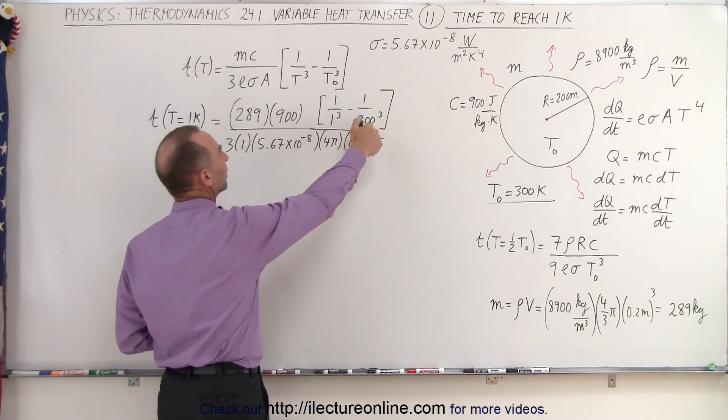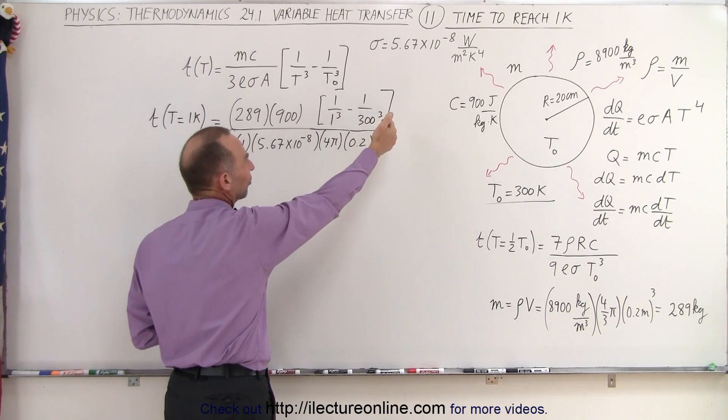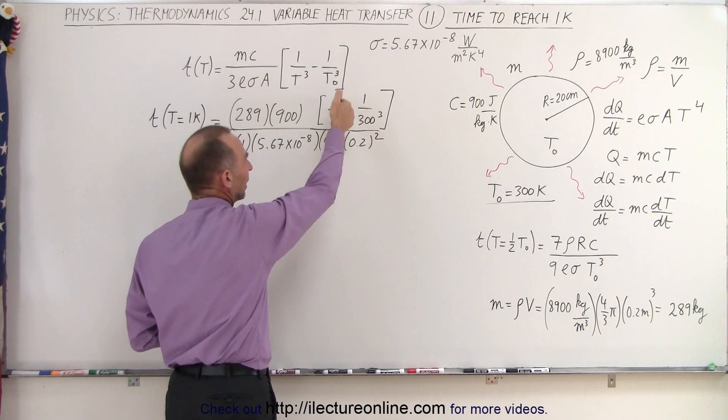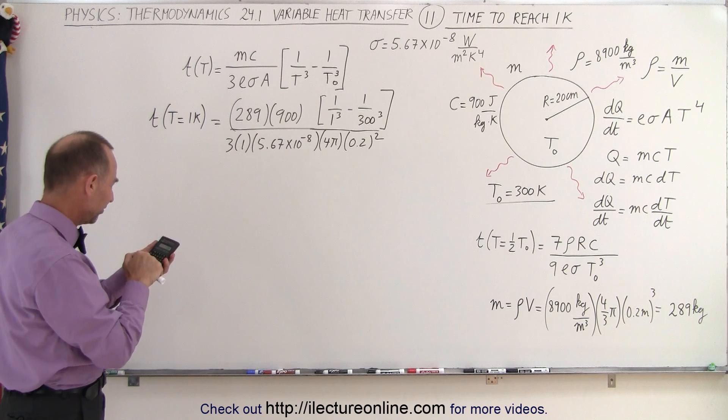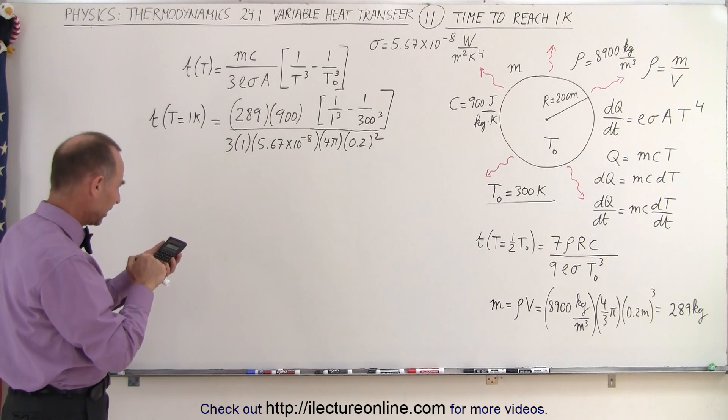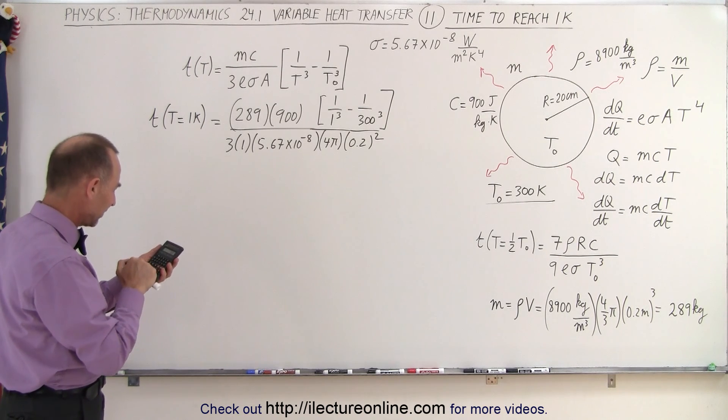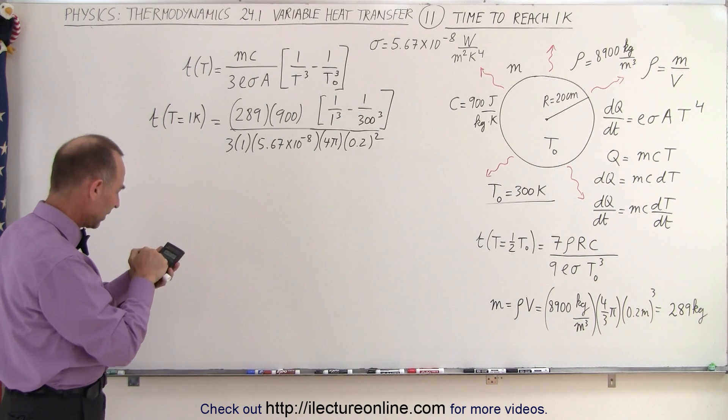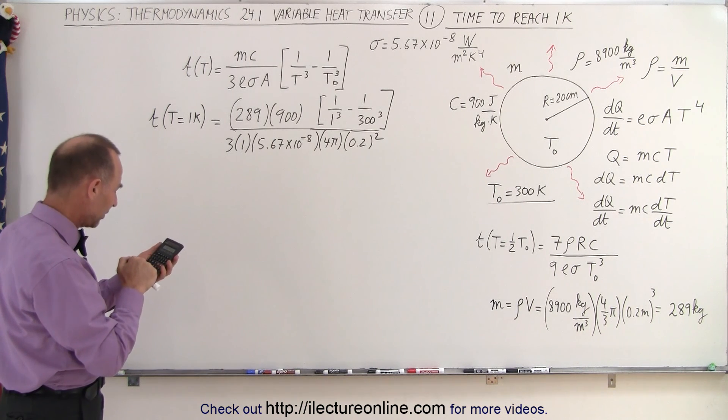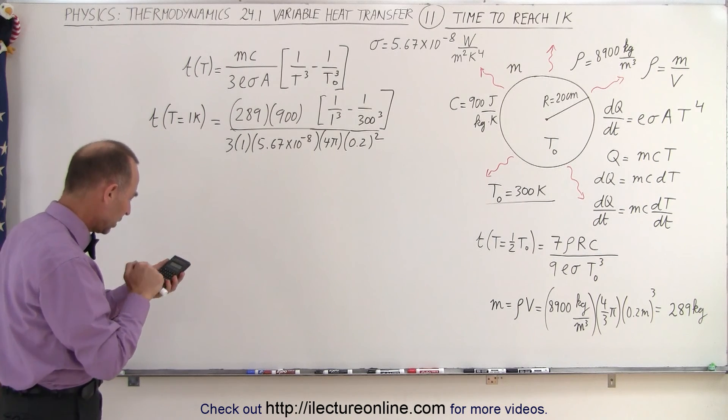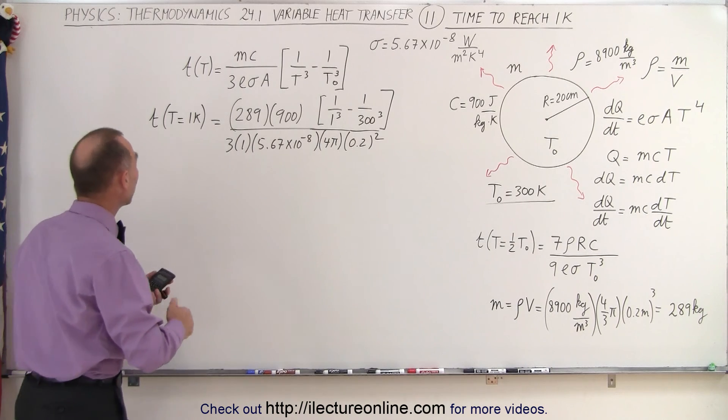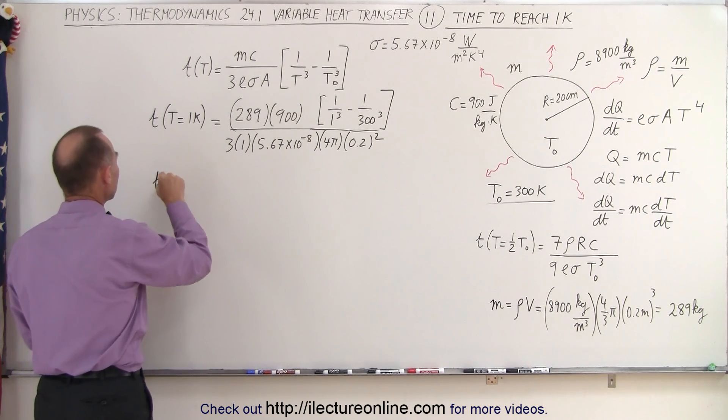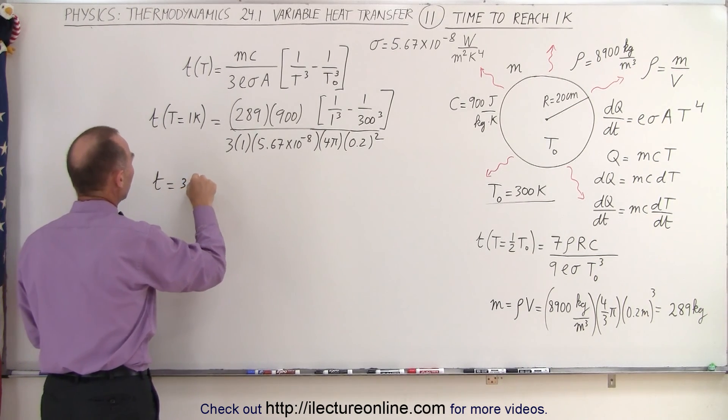Basically one over three hundred cubed is as close to zero as you can get, so this is basically equal to one. So we end up at 289 times 900 divide by three divide by 5.67e to the minus eight divide by four divide by pi and divide by 0.2 squared equals 3.04 times 10 to the 12th. Let's write that down: t is equal to 3.04 times 10 to the 12th.